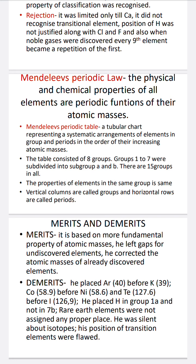Further demerits: Mendeleev could not assign any place for the rare earth elements — the lanthanide and actinide series were not given any place in his periodic table. He was also silent about isotopes — atoms of the same element having the same atomic number but different atomic masses — and could not assign them a place. Finally, his position of transition elements was also flawed.